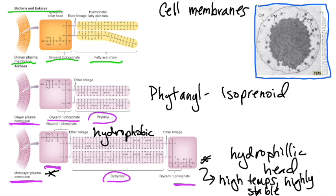We tend to see this monolayer plasma membrane in archaeons that live in very high temperatures, because it's very heat stable. In the picture in the upper right, we're looking at an electron micrograph of Ignicoccus, and you can see that it has an arrangement similar to gram-negative bacteria — it does have an outer membrane, a plasma membrane, and a very large periplasm, with the cell wall somewhere in there. So they can have similar arrangements to gram-positive and gram-negative cells as well.